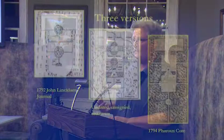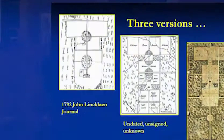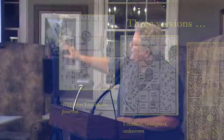A grand estate. Now, we have Faroe's map, but are there any other maps out there? Surely Faroe didn't pull this out of his head. Well, on the left, you have a 1792 map that was hand-drawn by John Linkling, who was a land agent from Cazenovia, where I live. And he had personally visited the baron's estate, and that's what he saw.